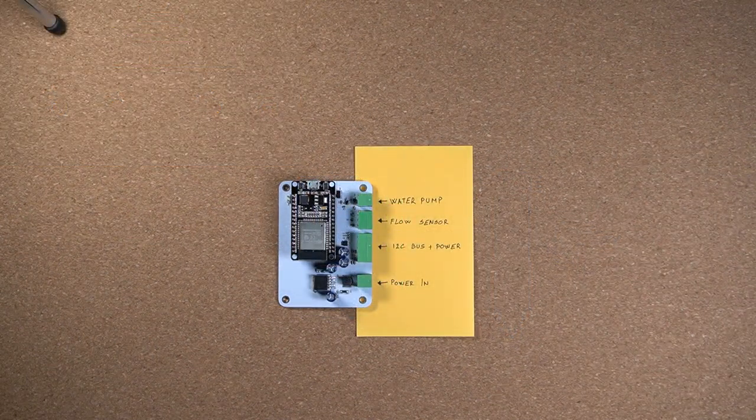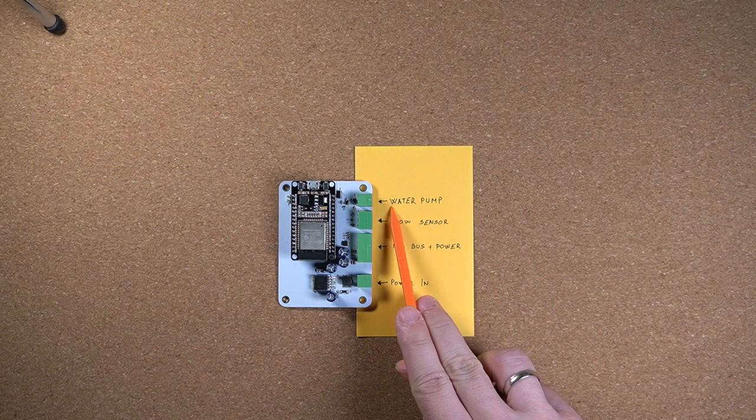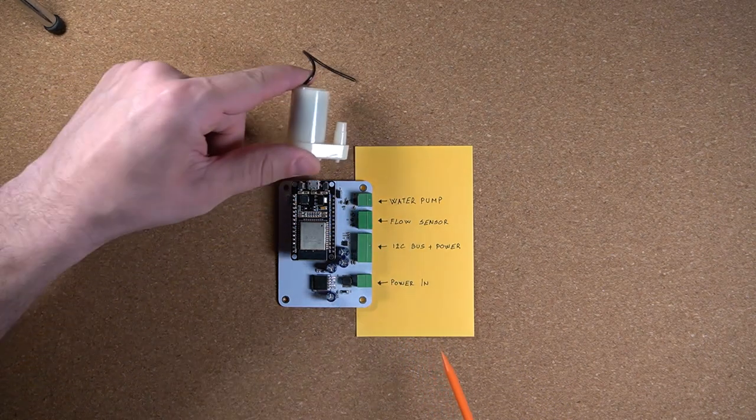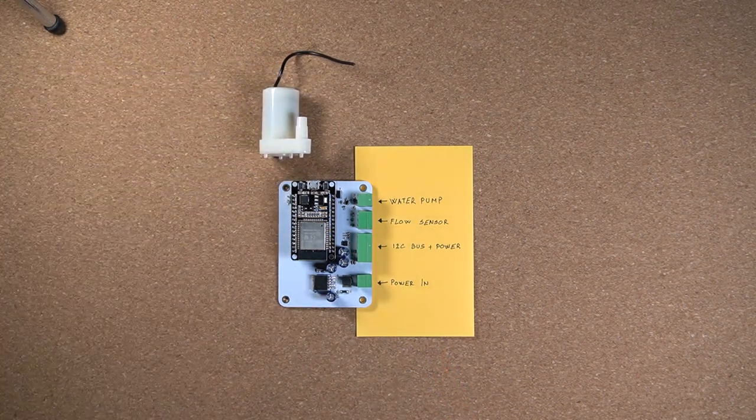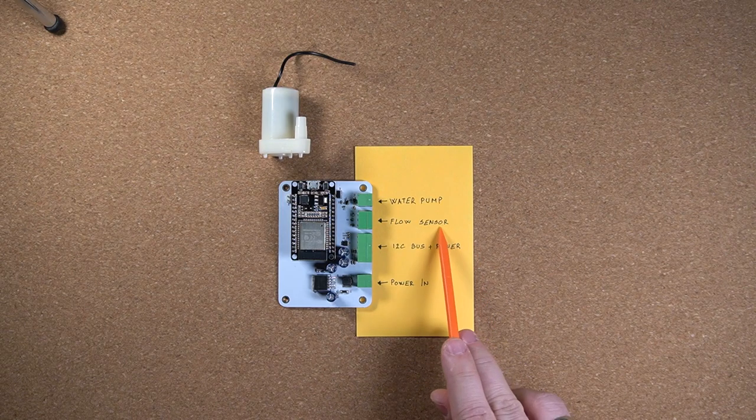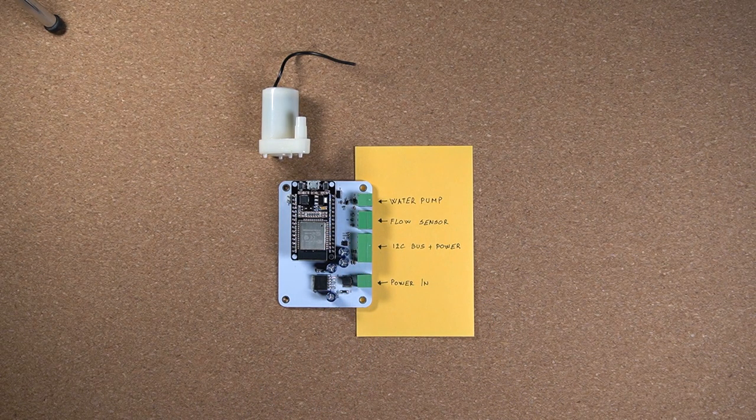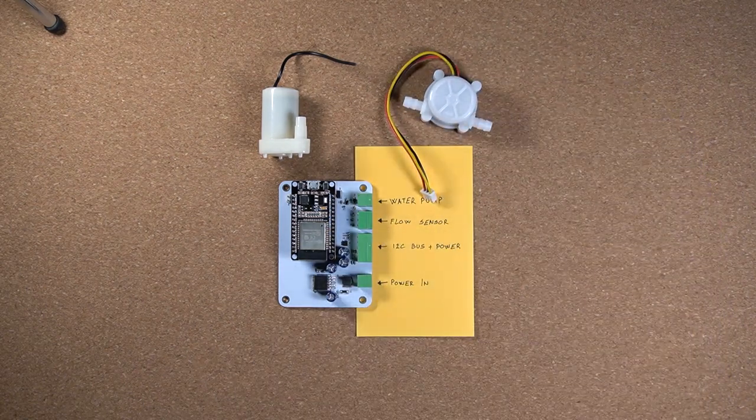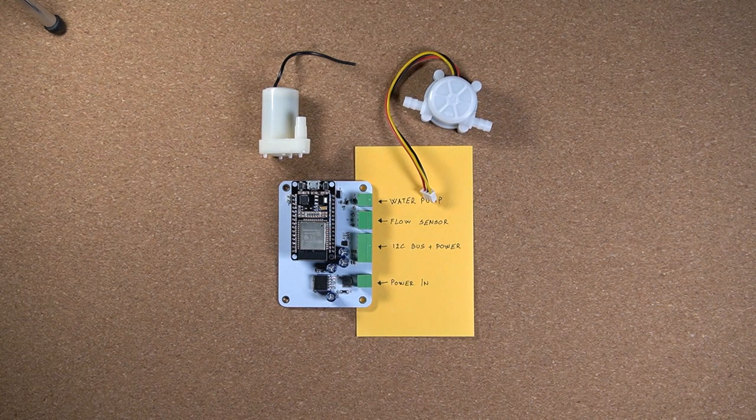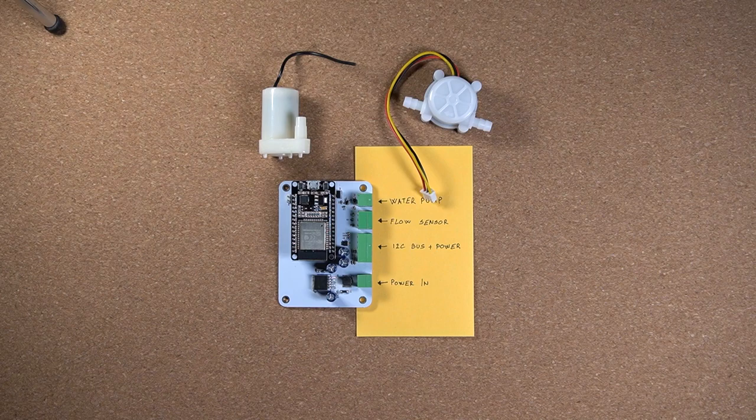Other features of the central unit is that it will have a driver for a DC water pump, so we can turn the water pump on and off to water the plants. And we also have this connector for the water flow sensor which allows us to measure how much water did we dispense. You can see that we have the pump and flow sensor which allows us to water the plant and measure how much water did flow through our system.